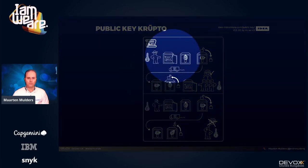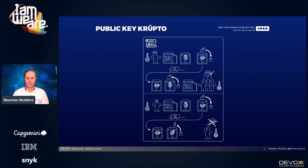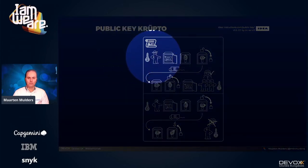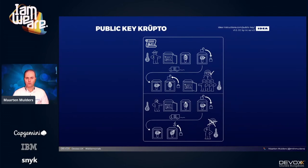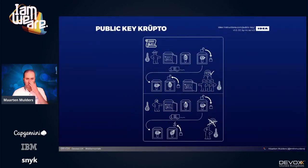Let's say somebody wants to send me a message. They write their message, close a lock with their private key, and put it on any insecure transport. Anybody who receives the lock can use the sender's public key to open it and find the letter inside. Because they know the public key is owned by that person, they know that person is the one who closed the lock and that whatever is inside is genuinely their message.